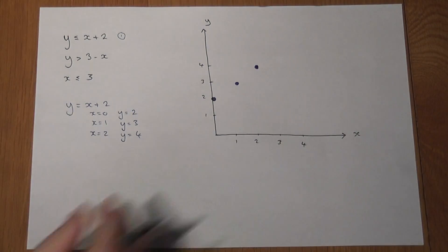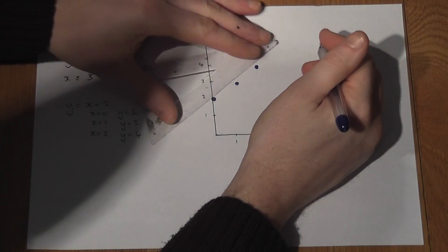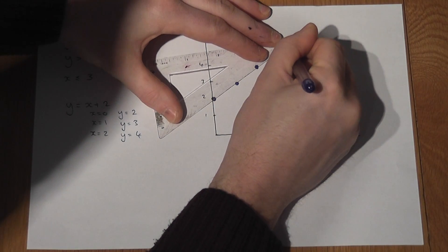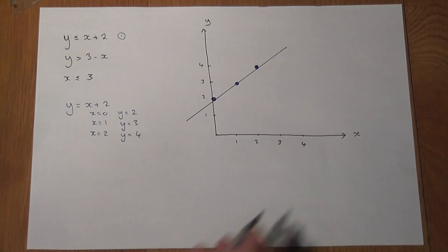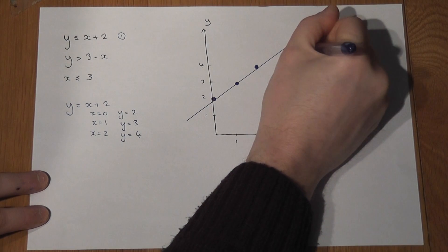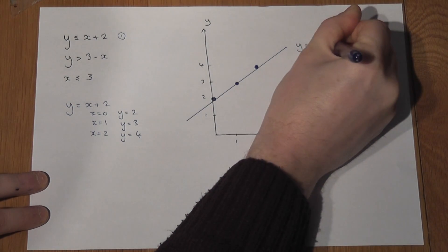And I could then draw a line through those three coordinates. And that is the line y equals x plus 2.